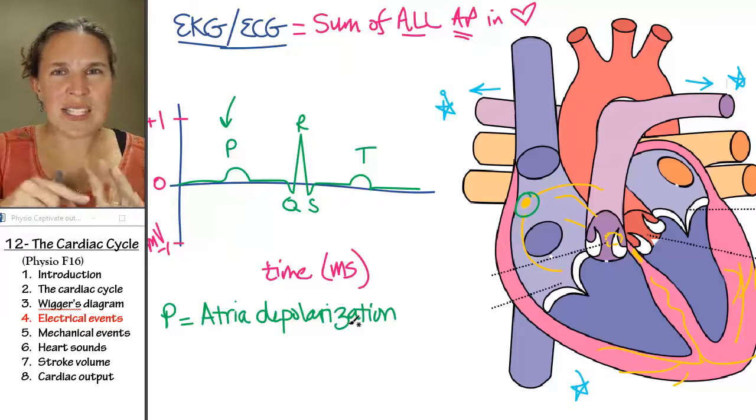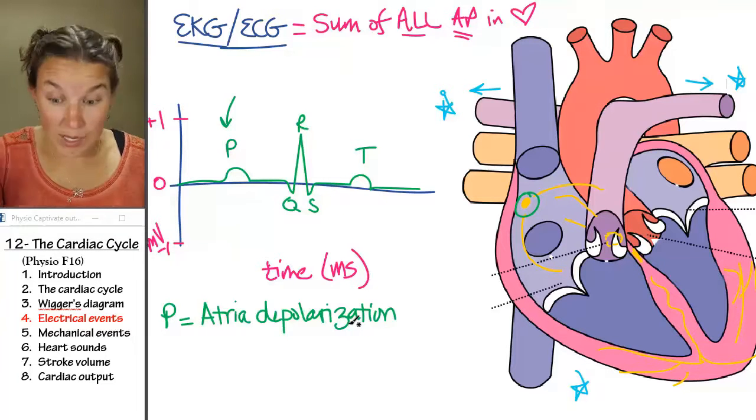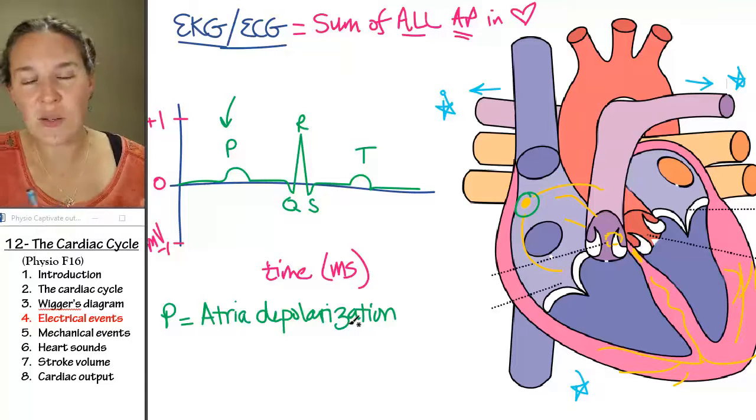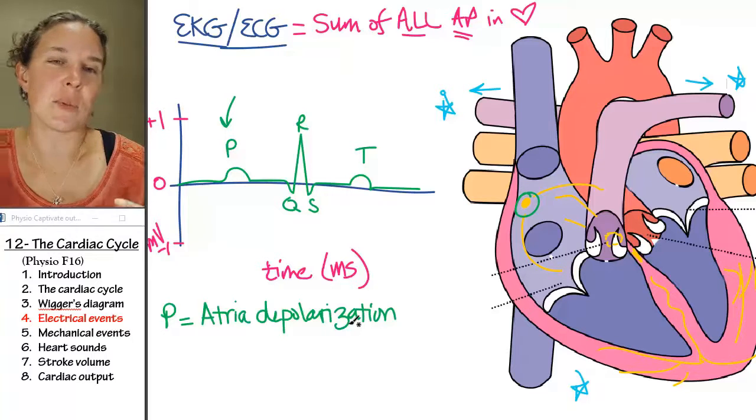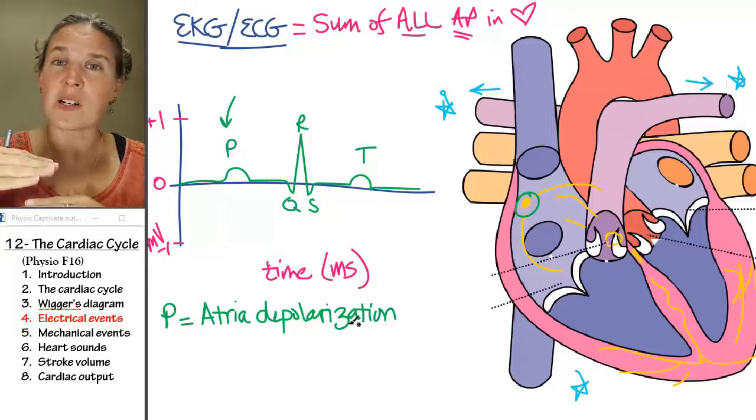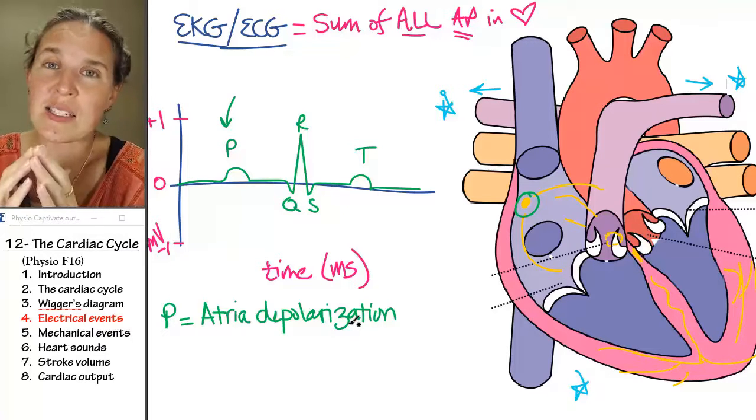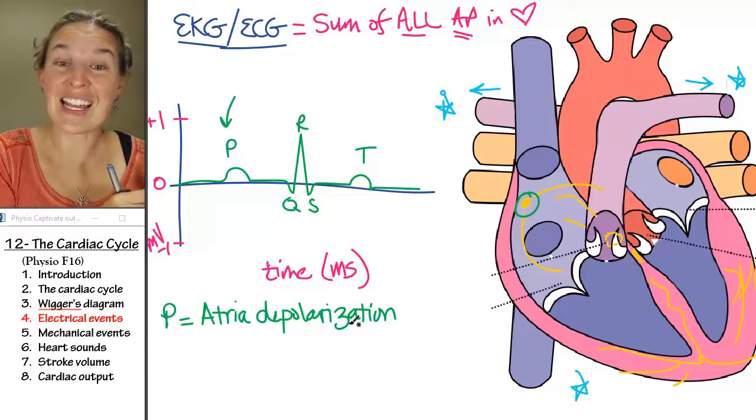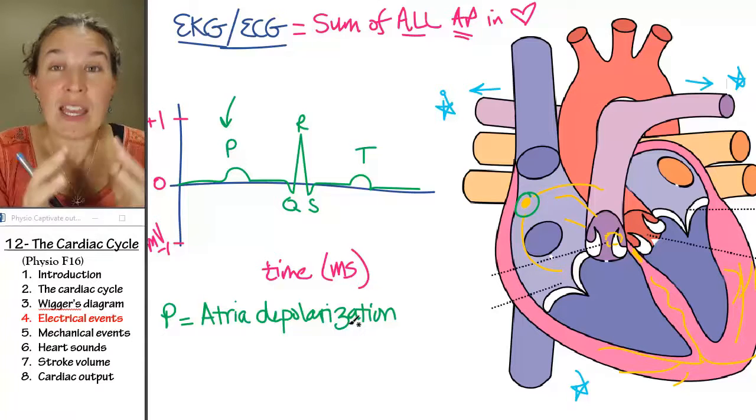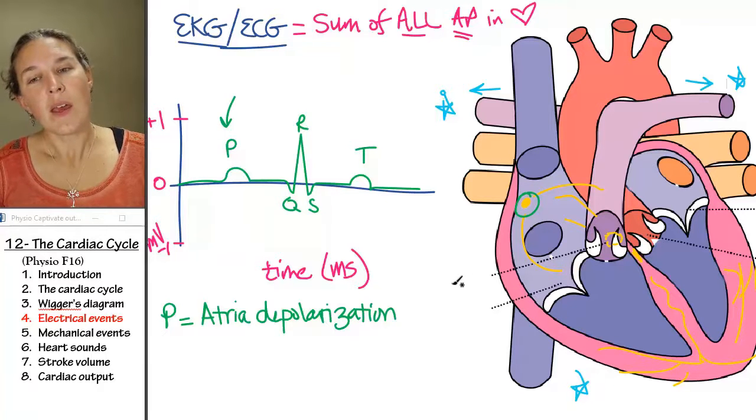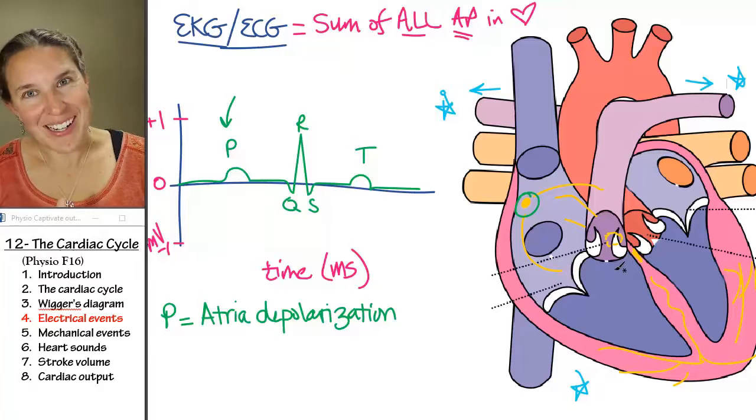Well, all those cells depolarized, which is going to lead to contraction, right? It's going to lead to all that calcium rushing in. We're going to let the calcium out of the sarcoplasmic reticulum. We're going to let all that calcium hook up with the sarcomeres. We're going to end up with contractile cells contracting, which we'll look at the consequences of that in the next section. When the atria depolarize, this is an electrical bump that we see.